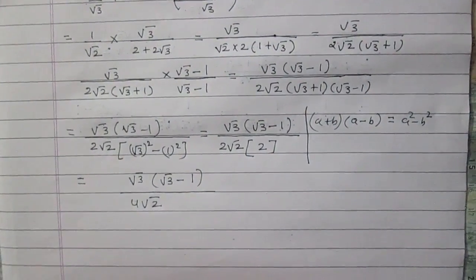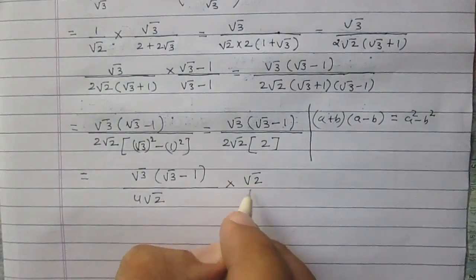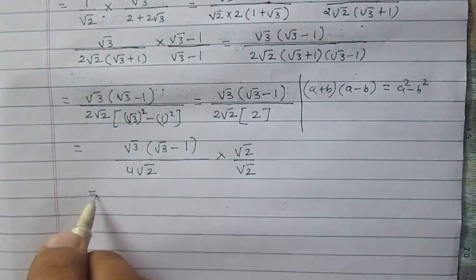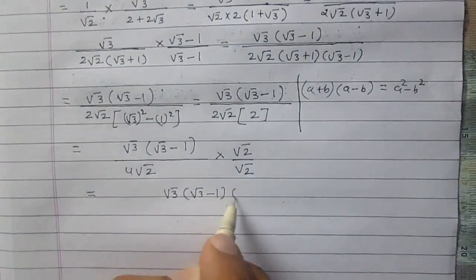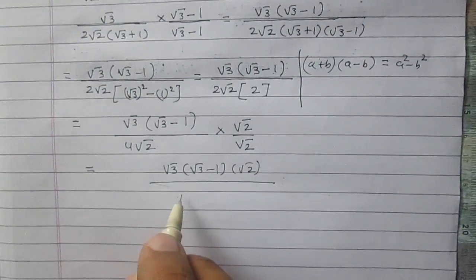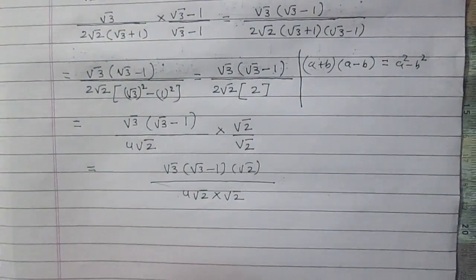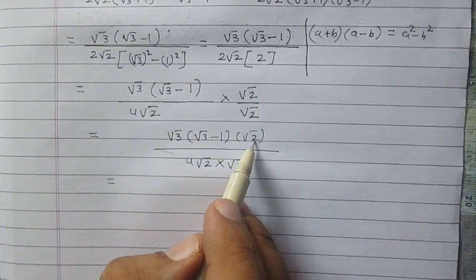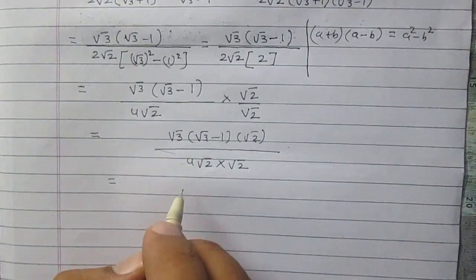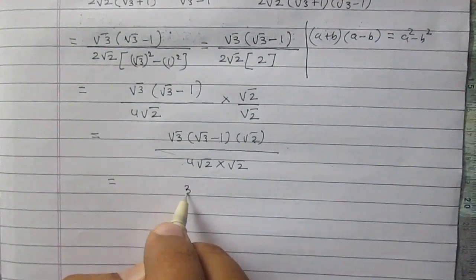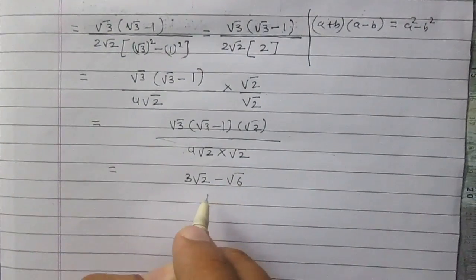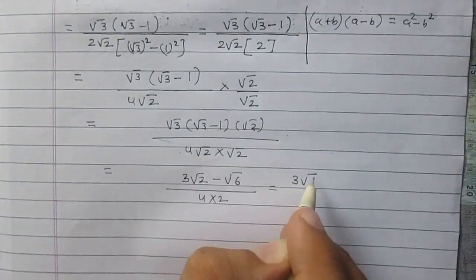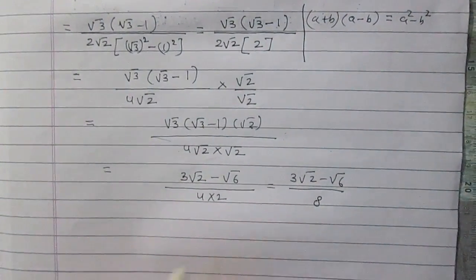Once again we will rationalize it by multiplying the numerator and denominator by square root 2 individually. It will become square root 3 times (square root 3 minus 1) times square root 2 in the numerator, and 4 square root 2 times square root 2 in the denominator. Multiplying square root 3 and square root 2 through both terms gives 3 root 2 minus root 6 in the numerator, and 4 multiplied by 2 equals 8 in the denominator. So the final answer is (3√2 − √6) / 8.